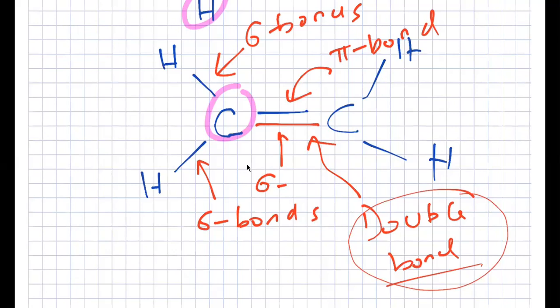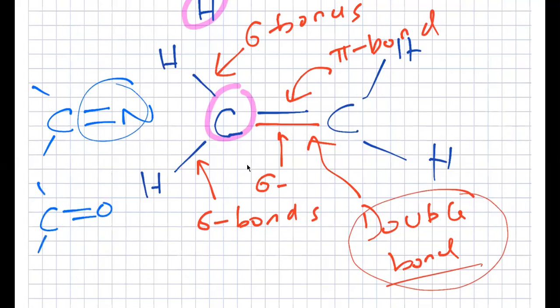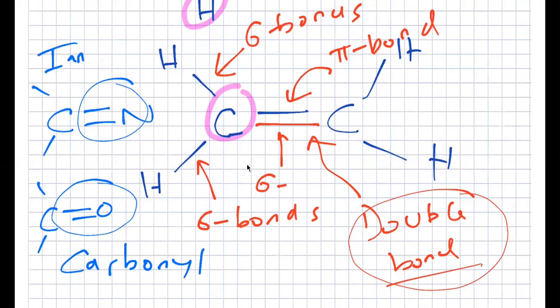It doesn't matter if the double bond is between two carbons, like an alkene, or between carbon and nitrogen, like an imine, or carbon and oxygen, like a carbonyl. The double bond is always a sigma and a pi. A carbon-carbon double bond is called an alkene. A carbonyl and an imine are examples of other functional groups with double bonds — all made up of sigma and pi.